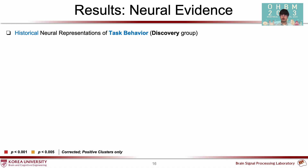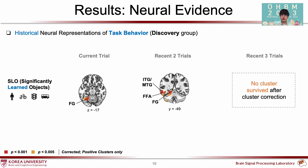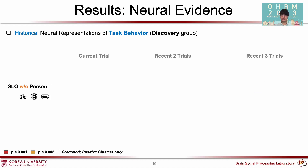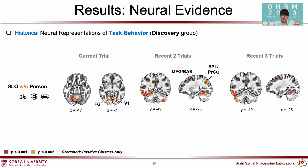Historical representations also appeared in the task-behavioral models. We first performed RSA associated with objects showing significant learning effects, named SLO. Both current and recent two trial models showed activity in visual regions. However, the recent two trials model was also represented in temporal, parietal, and frontal ROIs, suggesting higher-order functions. This effect was clear on the SLO without-person models, where we found the fusiform gyrus, inferior or middle temporal gyrus, and middle frontal gyrus clusters in both recent two and three trial models.